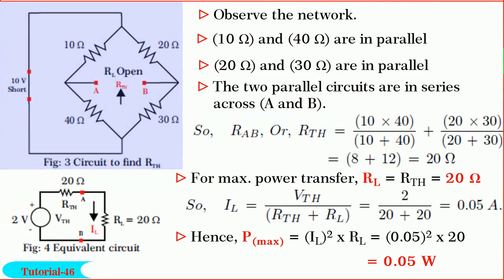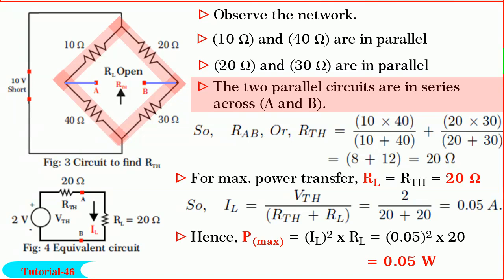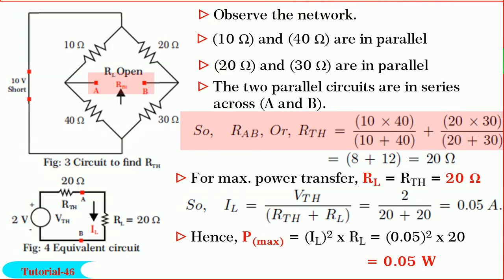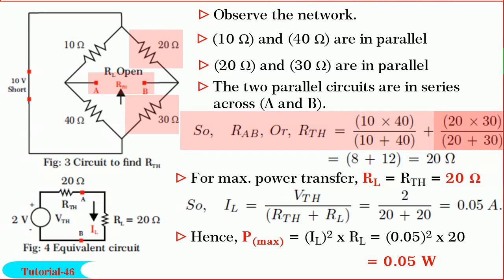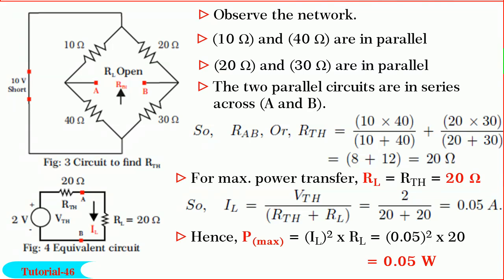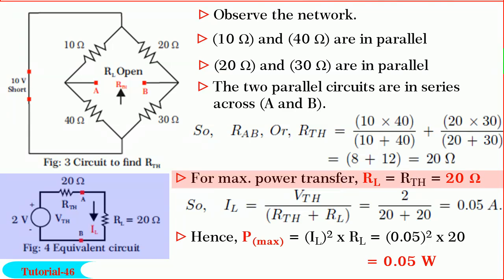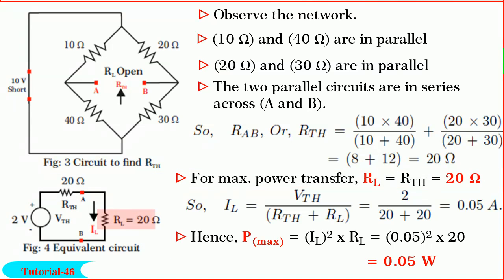So, to find R-Thevenin, the circuit drawn is shown in the figure. Observe the network: 10 ohm and 40 ohm are in parallel, and 20 ohm and 30 ohm are also in parallel. These two parallel circuits are in series between terminals A and B. So, RAB or R-Thevenin equals (10 into 40) divided by (10 plus 40), plus (20 into 30) divided by (20 plus 30). By solving, we get R-Thevenin equal to 20 ohm. Using V-Thevenin and R-Thevenin, the equivalent circuit across the load branch is shown in the figure. Since the circuit is DC, for maximum power transfer, RL should equal R-Thevenin. Hence, RL equals 20 ohm.